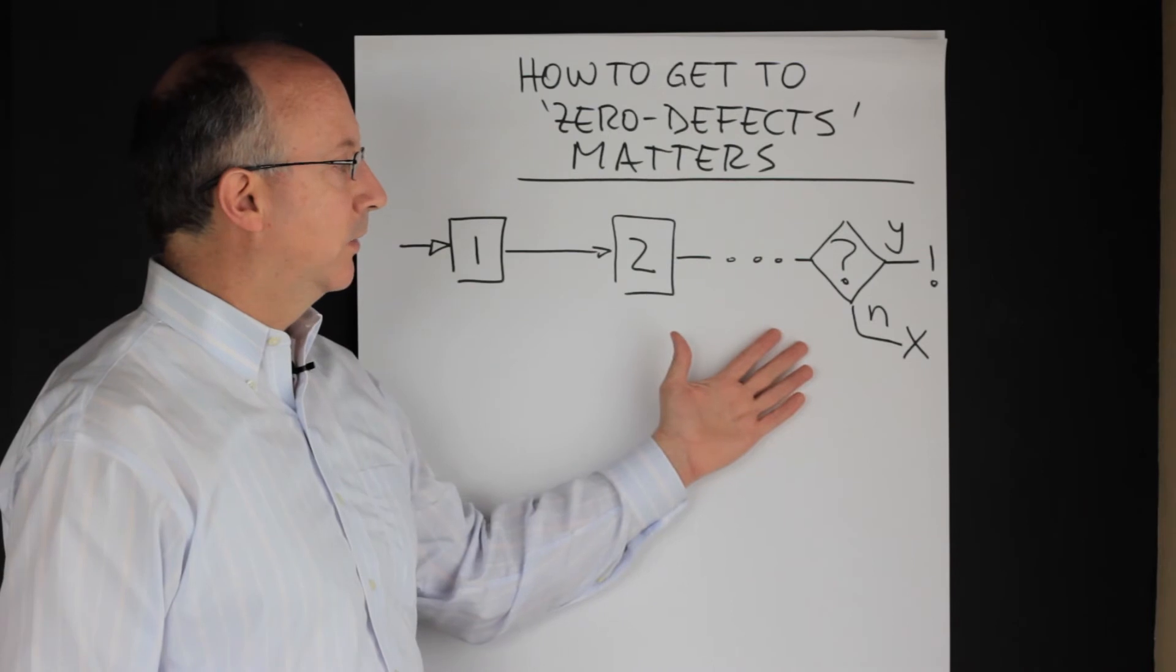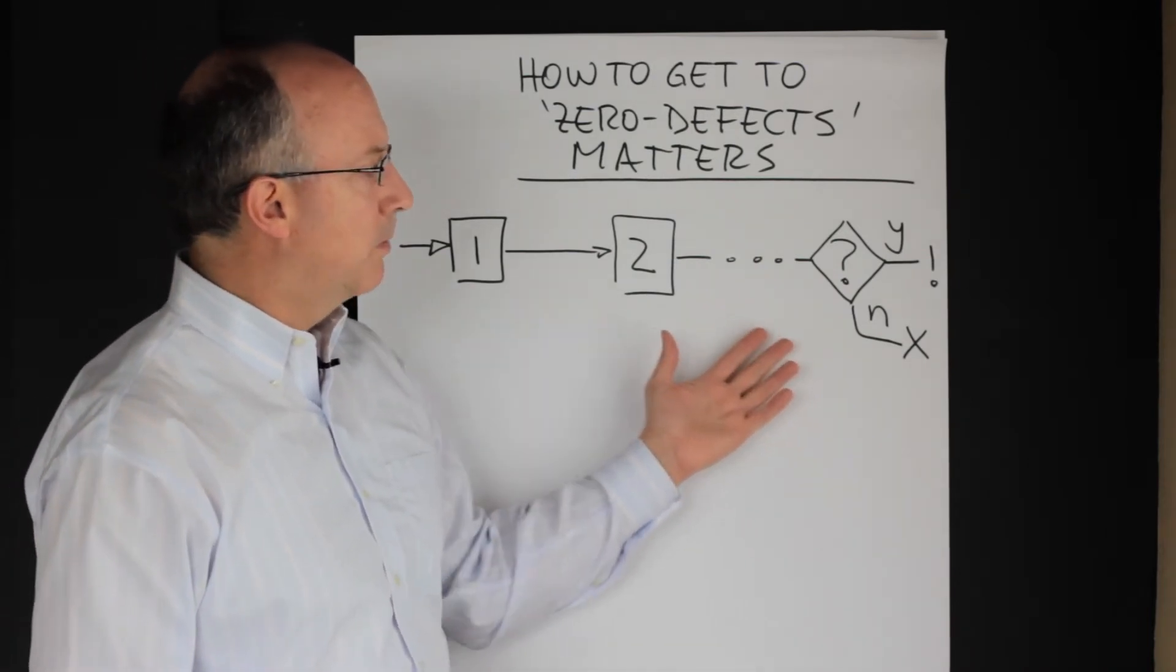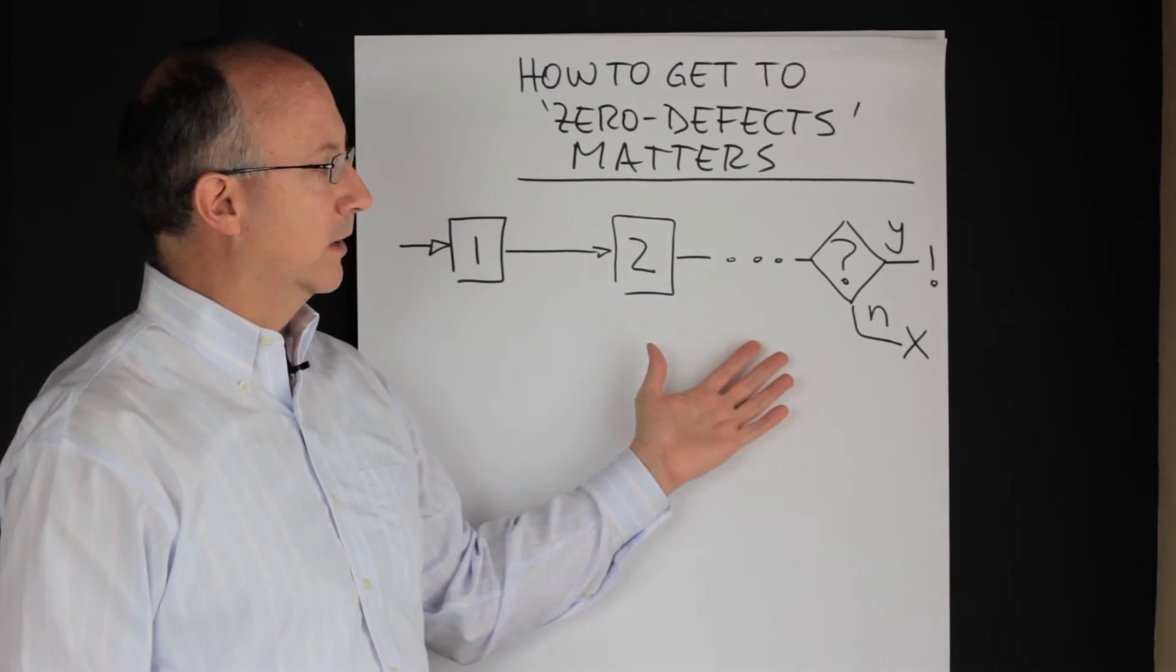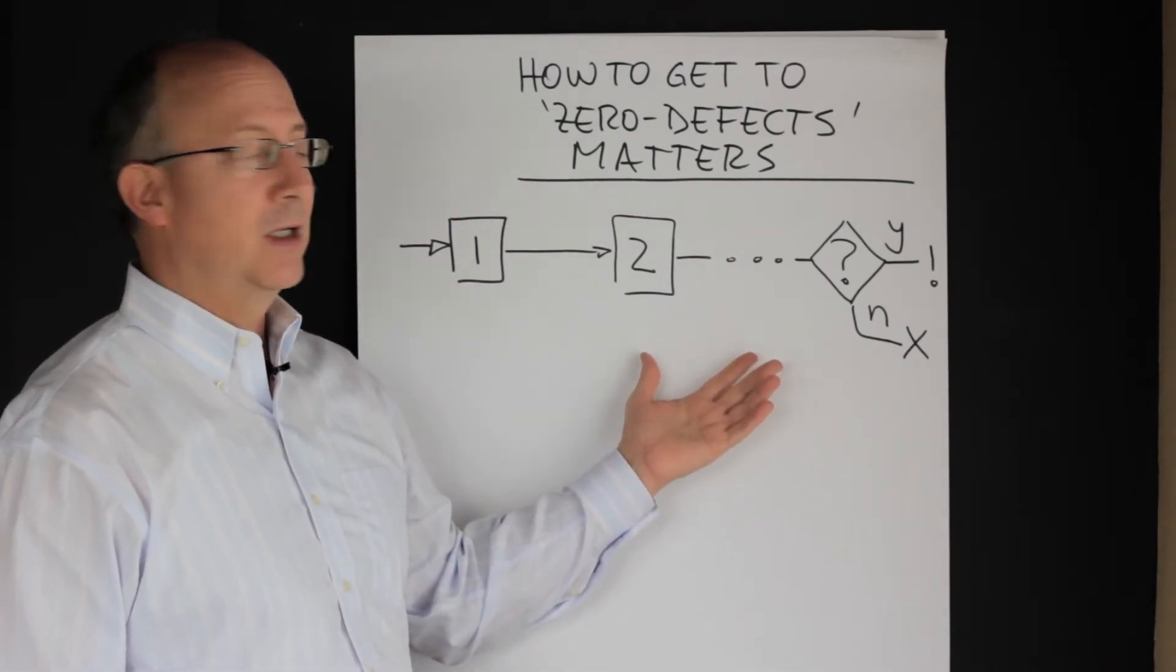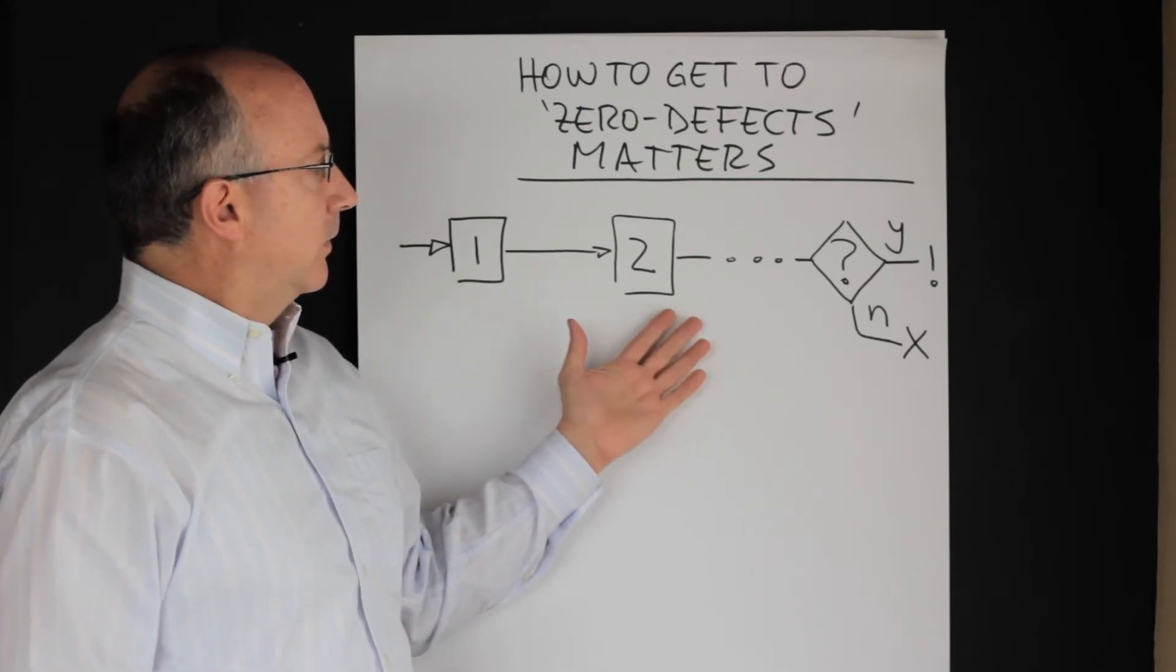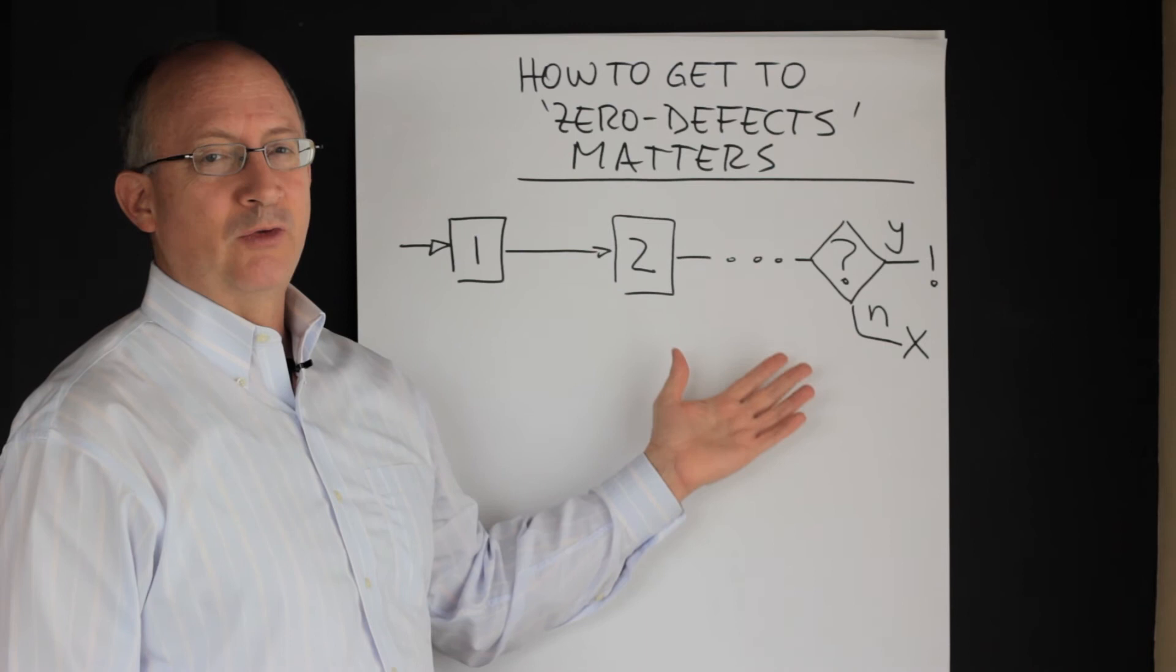This is what is traditionally known as quality control. It is a pretty old way of looking at quality. It is 19th century, based on 19th century theory, and it is really better than not doing anything but it's really not so good.